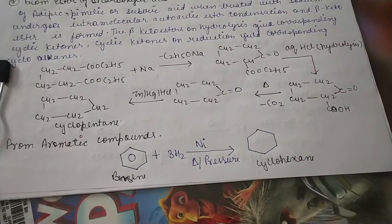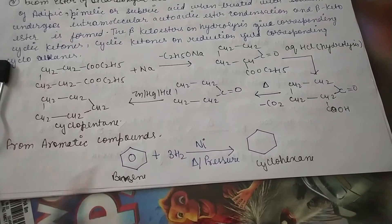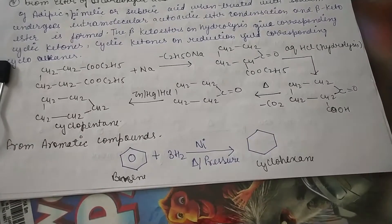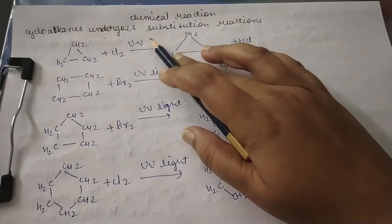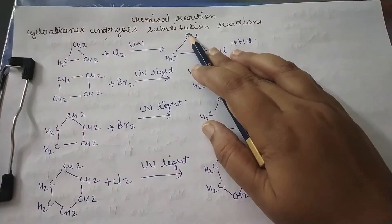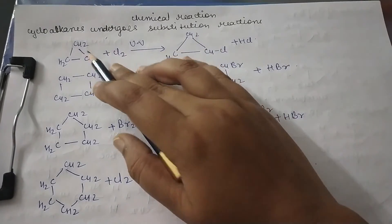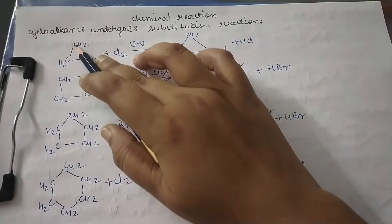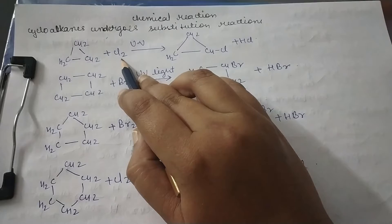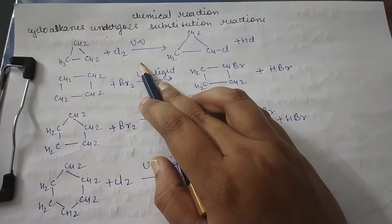Next, from aromatic compounds like benzene, it gets reduced to form cyclohexane. Regarding chemical reactions, cycloalkanes generally undergo substitution reactions because the hydrogens present can be easily substituted by other groups.